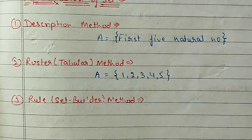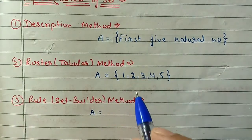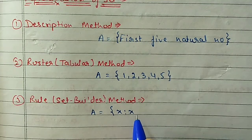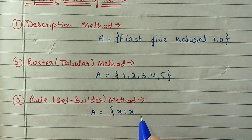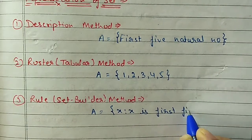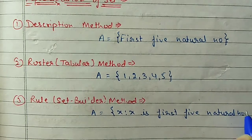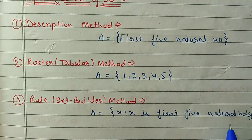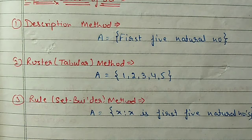The third method is set builder form or rule method. In this method we will mix the two previous methods. We write x such that x satisfies a property - meaning we write the property of x. So: x such that x is a first 5 natural number - you write x such that and then mention the definition of your set. These are the three methods to represent a set.